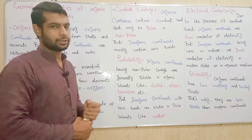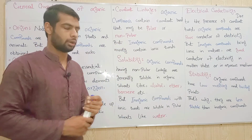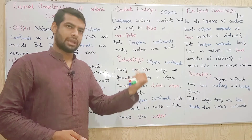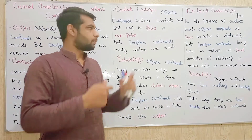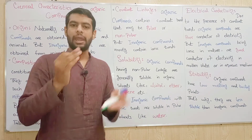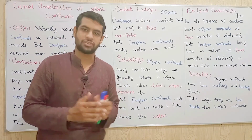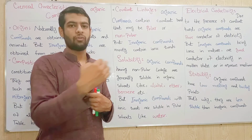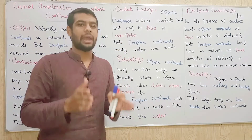The third point is covalent linkage. Organic compounds contain covalent bonds that may be polar or non-polar. Polar means different atoms make a bond — it is called a polar covalent bond. Examples are H2O and HCl, where hydrogen and chlorine are two different types of atoms making a covalent bond, which is called a polar covalent bond.